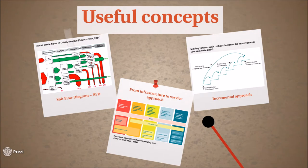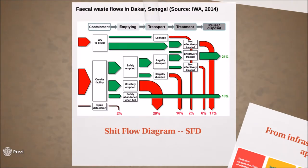In addressing these challenges, some useful concepts and tools have been developed. The Sheetflow Diagram is one such useful tool which is easily understood and visually communicates how excreta flows through a city or town. The green paths show how excreta is properly contained and the red paths show excreta lost into the environment due to inefficiency of the system along the whole sanitation chain from containment to disposal or reuse. In this example, it shows that only 21% of excreta from sewers and 10% from on-site facilities are properly treated and disposed of in the city of Dhaka.